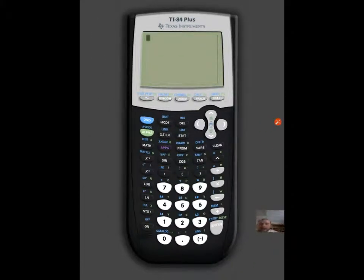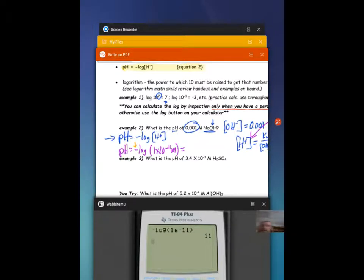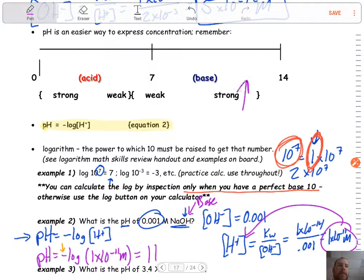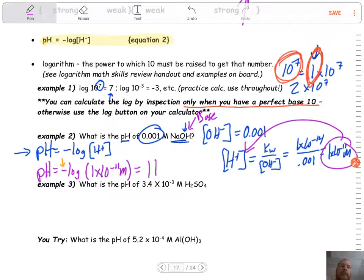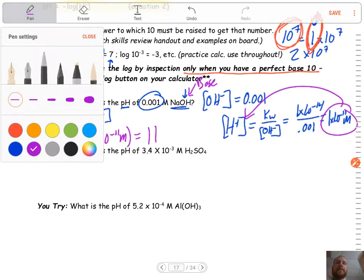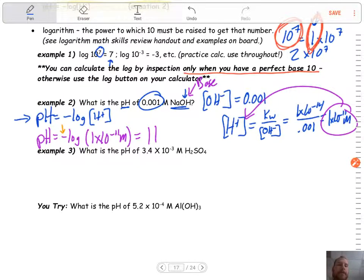So how I would plug this in is make sure you use the negative function, not the minus sign. Log, and then it's going to be 1 second E, negative 11. And my answer that I should get would be the negative of 11, which is just 11. So that would be my answer for this problem, pH of 11. Think to yourself, does that answer make sense? What type of substance did I start with? This was a base. So is a pH of 11 a base pH? Absolutely. It's actually a pretty strong base. So you have a built-in check.